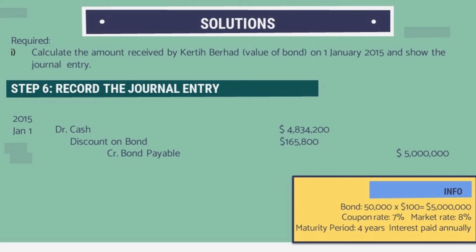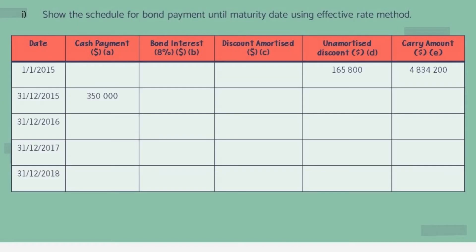For the last step, we record the journal entry. Debit Cash $4,834,200, debit Discount on Bond $165,800, and credit Bond Payable $5,000,000. If you follow all these steps you can find the value and record the journal entry very easily.